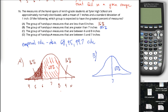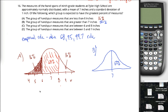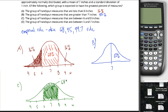What about the group of hand span measures between 6 and 8 inches? The bounds of this area are exactly one standard deviation below the mean and one standard deviation above the mean, so the empirical rule tells me directly that this is approximately 68%. We've got a new leader in the clubhouse.